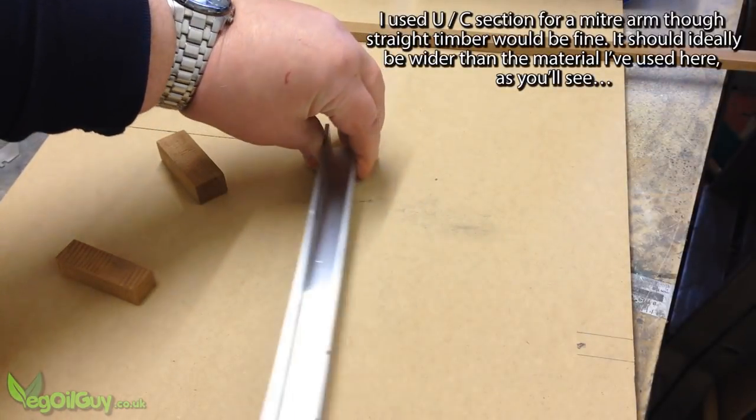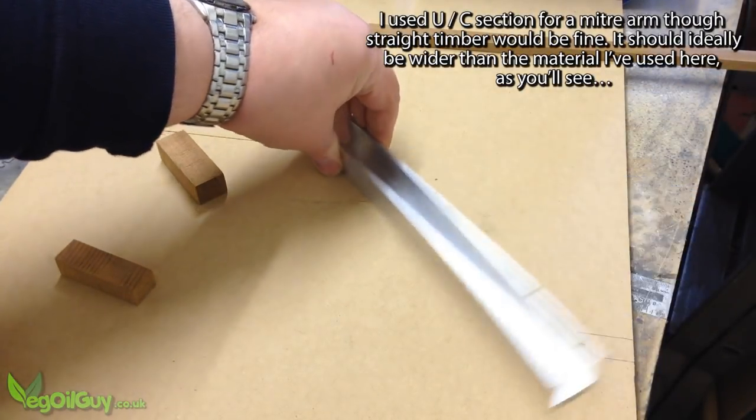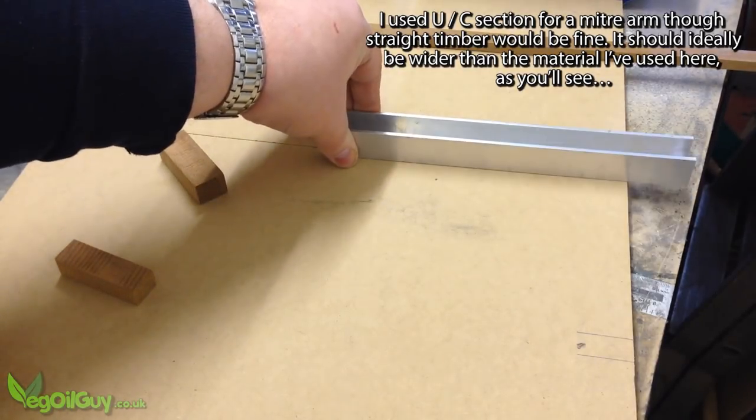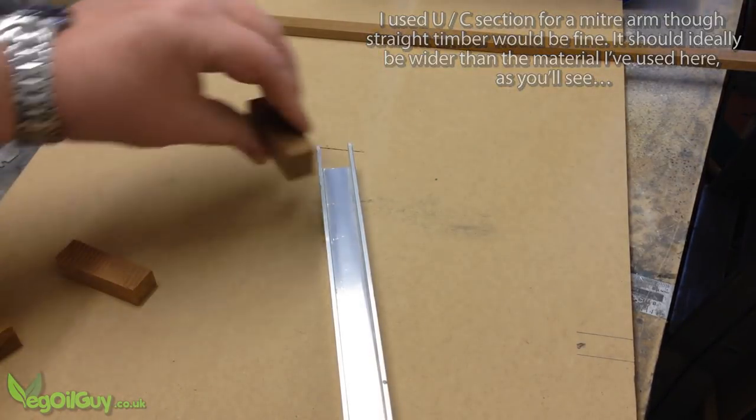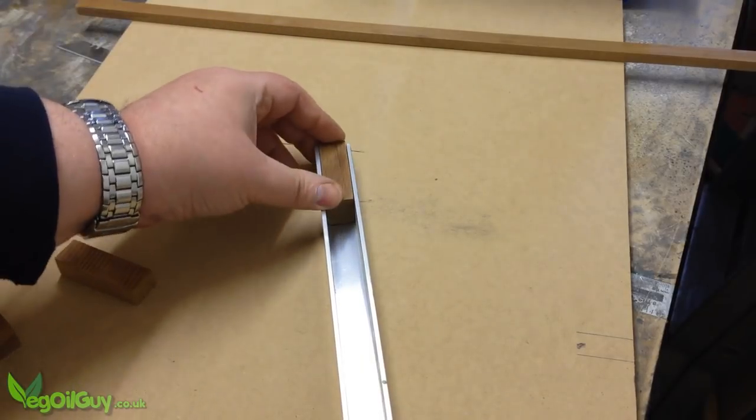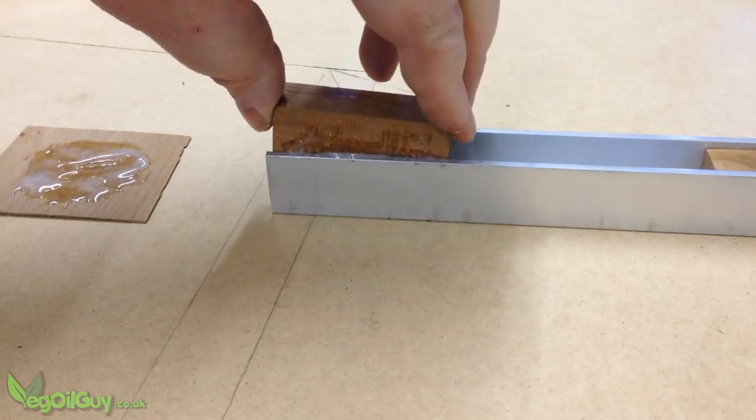A mitre arm is needed and I decided to use a scrap of U-channel as it's smooth and straight, though a length of straight timber would work just as well. I cut a couple of pieces of hardwood and glued these into the channel.